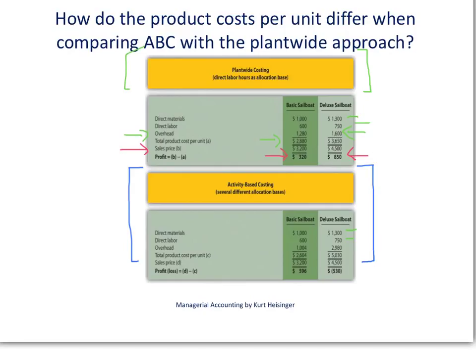After going through the activity-based costing process, as shown in the part one video, we identified our overhead costs at $1,004 for the basic sailboat per unit and $2,980 for the deluxe sailboat per unit. As a result, our product costs per unit were significantly different than what we saw with the plant-wide approach. For the basic sailboat, our profits were actually higher than initially thought — $596 per unit instead of $320. And our deluxe sailboat, instead of $850 per unit in profit, we actually have a $530 loss for each unit we sell. This starts to explain why our overall company profits went down when we were pushing the sales of the deluxe sailboat.